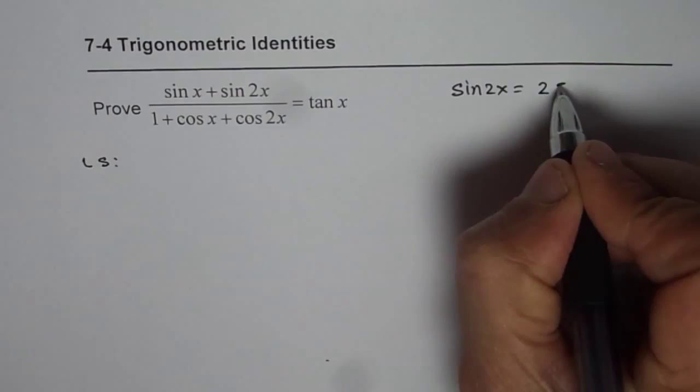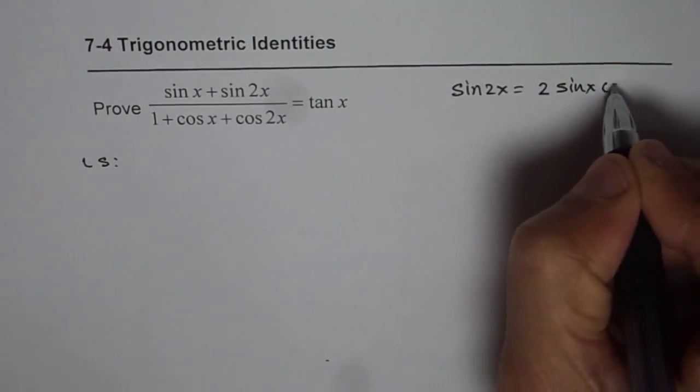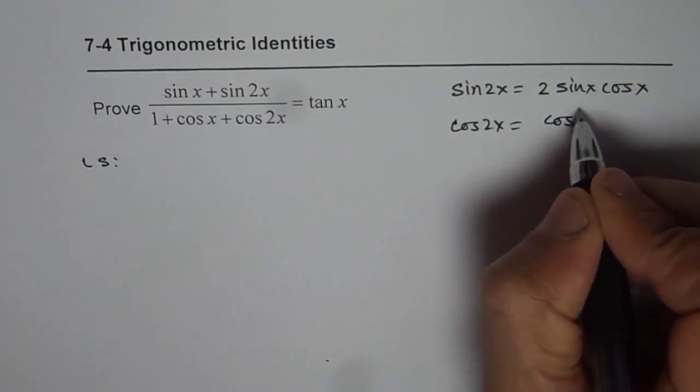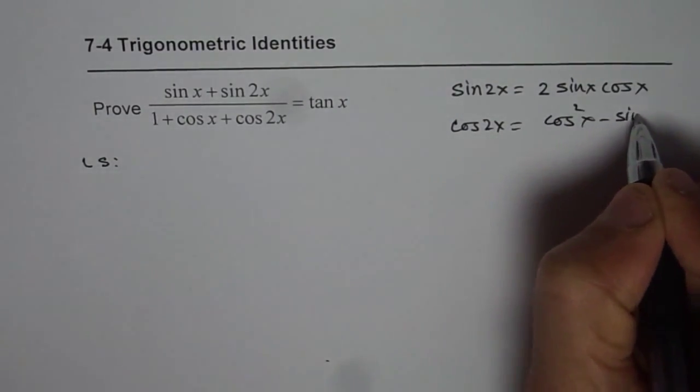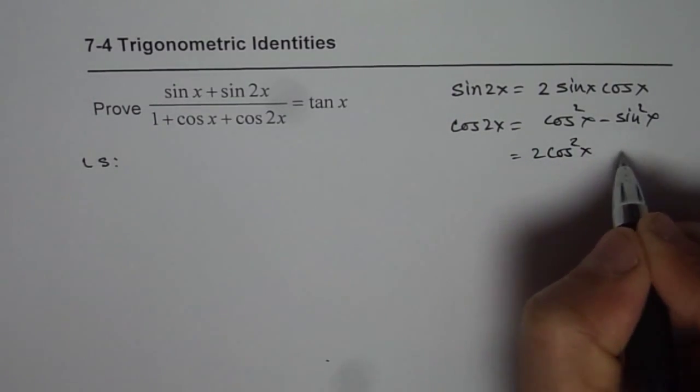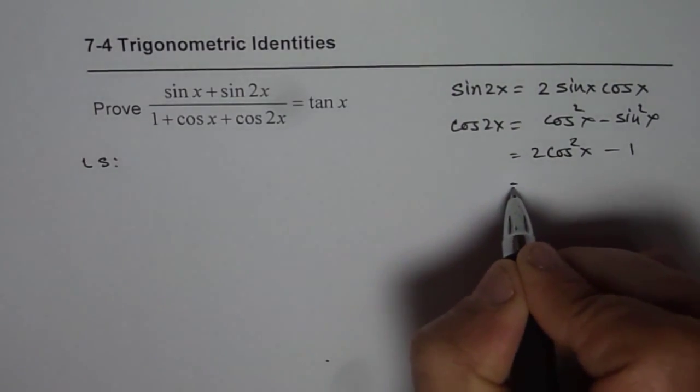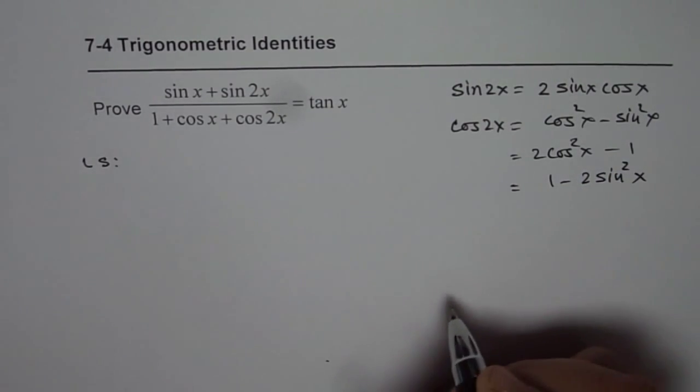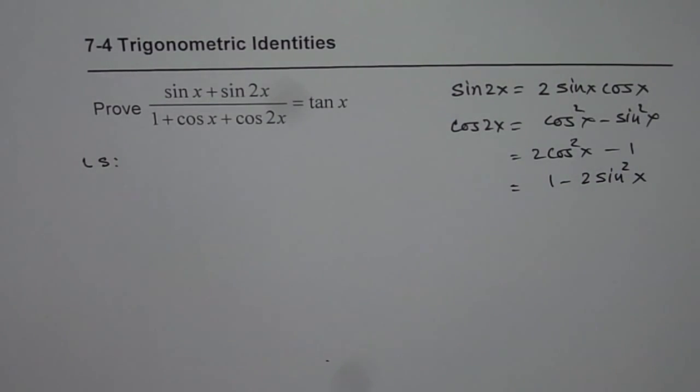Sin 2x could be written as 2 sin x cos x. As far as cos 2x is concerned it could be written as cos squared x minus sin squared x or 2 cos squared x minus 1 or even 1 minus 2 sin squared x. So these are the formulas which we can use to simplify or prove our identity.